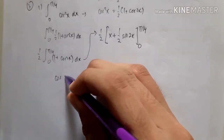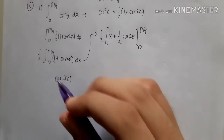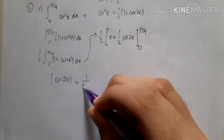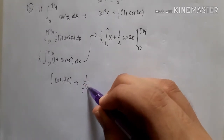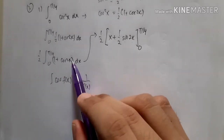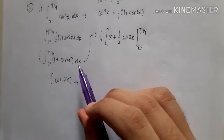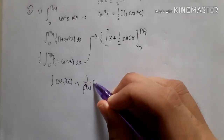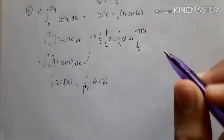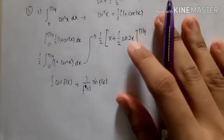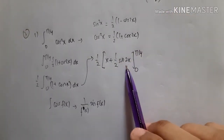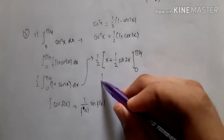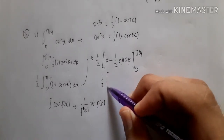You might wonder why the integral of cos 2x gives (1/2) sin 2x. Remember: if you integrate cos(f(x)), the result is (1 over the derivative of f(x)) times sin(f(x)). So for cos 2x, the derivative of 2x is 2, giving (1/2) sin 2x.